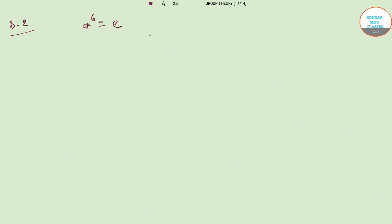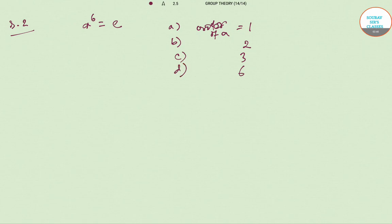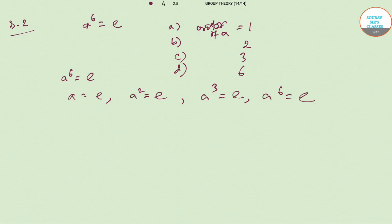The next question says: suppose A is a group element and A^6 = E. The options are: order of A must be 1, order of A may be 2, order of A may be 3, or order of A may be 6. Since A^6 = E, the possibilities are A = E, A^2 = E, A^3 = E, or A^6 = E — we take possible divisors of 6 — so the order can be 1, 2, 3, or 6. All four are possible.